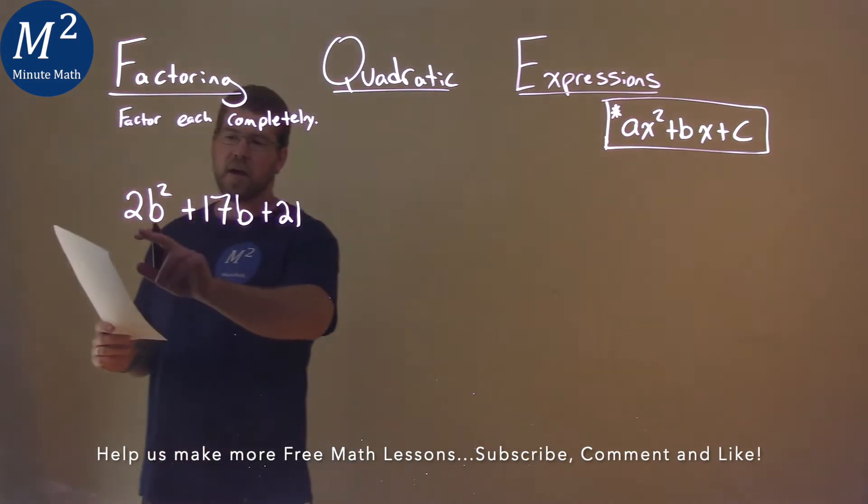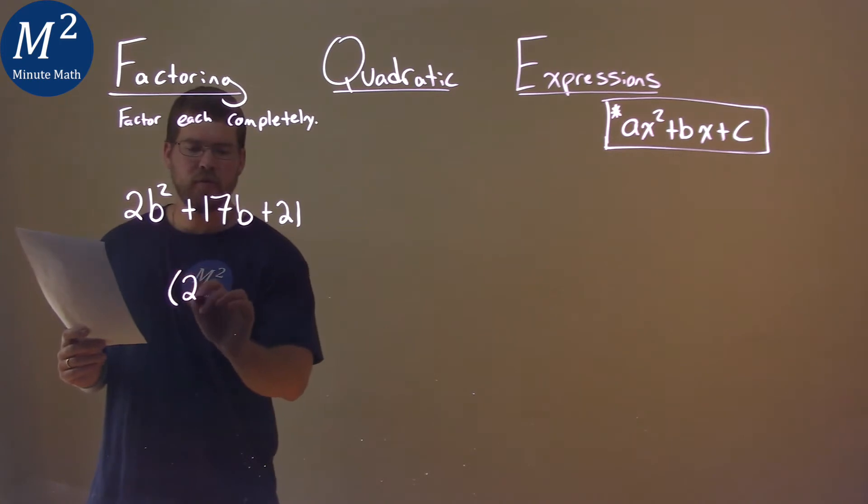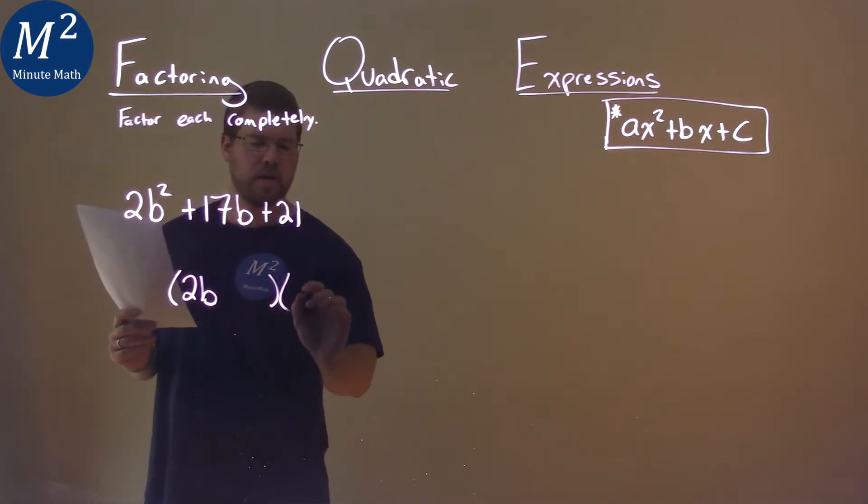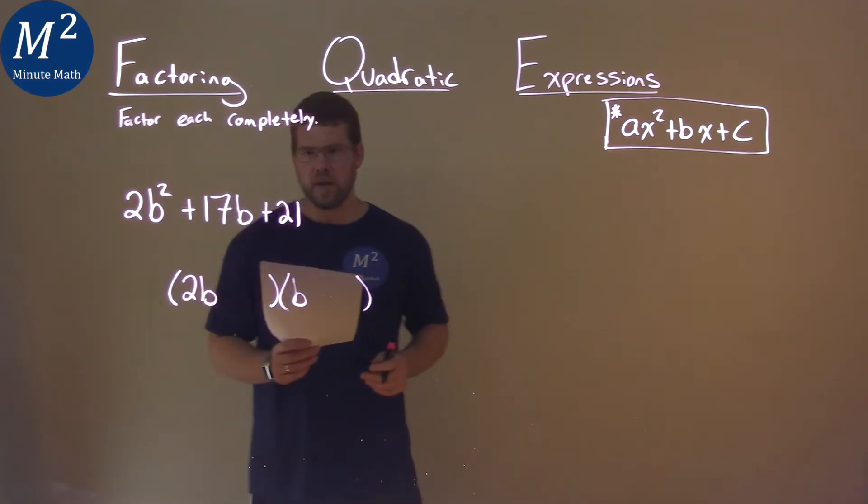The a value being 2, a prime number, lets us know that this has to be in some form of 2b in parentheses, then times 1b here, and we fill in the rest of the factored form.